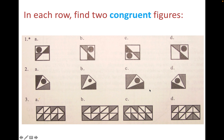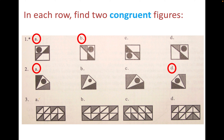Let's see if you can recognize congruent figures. In each of these rows, can you spot two figures that are congruent? In number one, A and B are congruent — if you flip one, you can get the same image. In row two, it's A and D. In row three, it's A and C. I hope you had success finding those congruent figures.